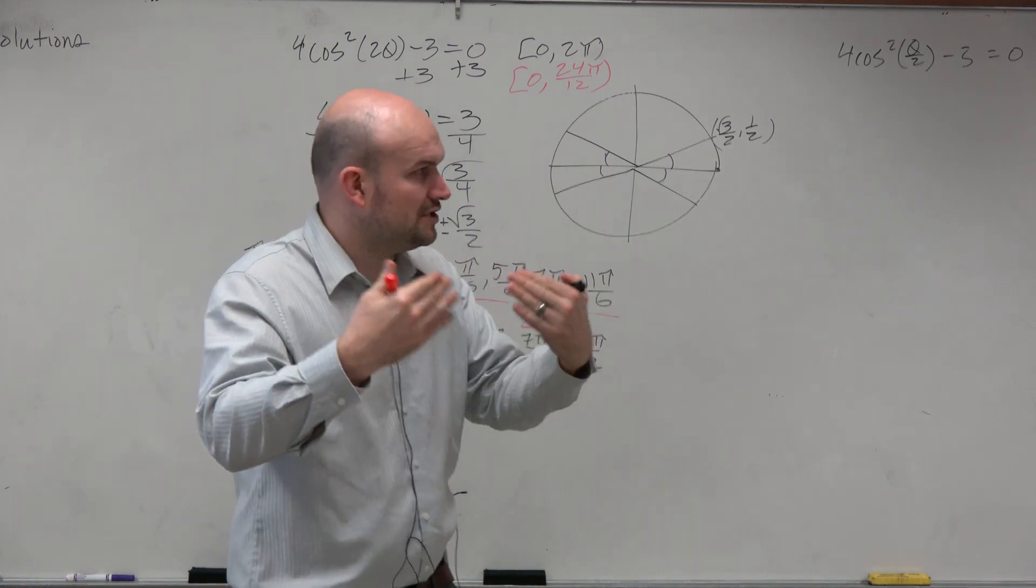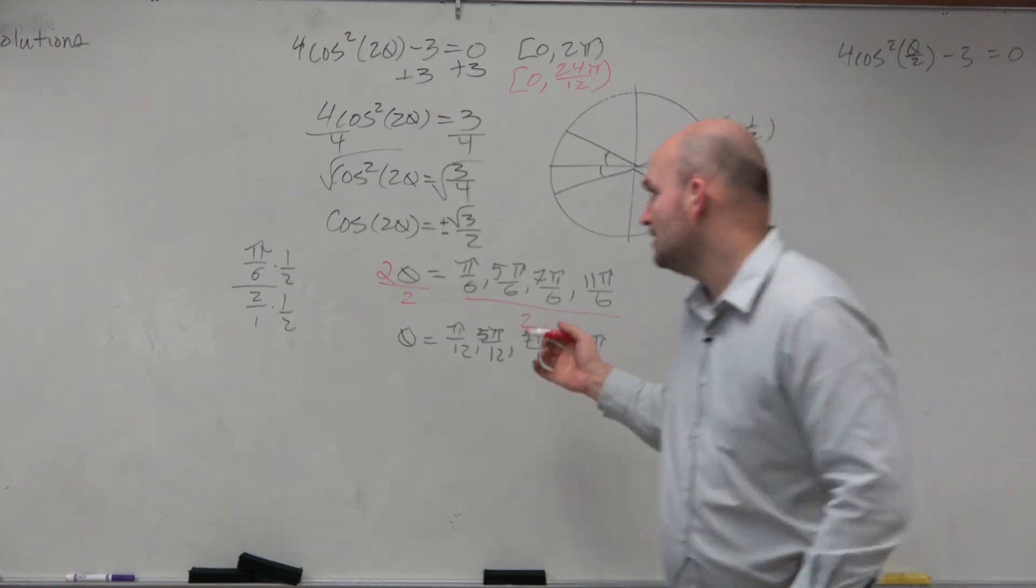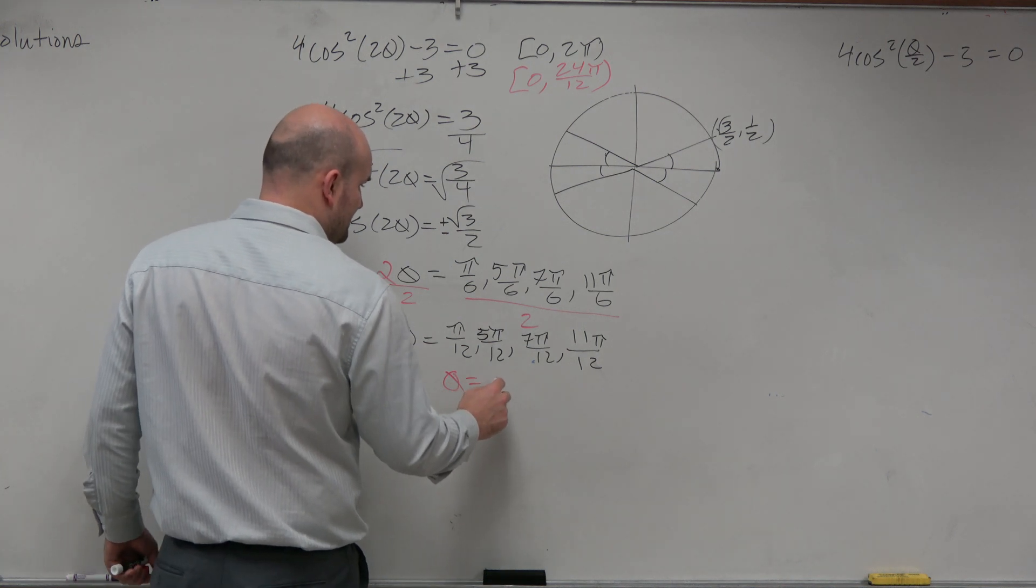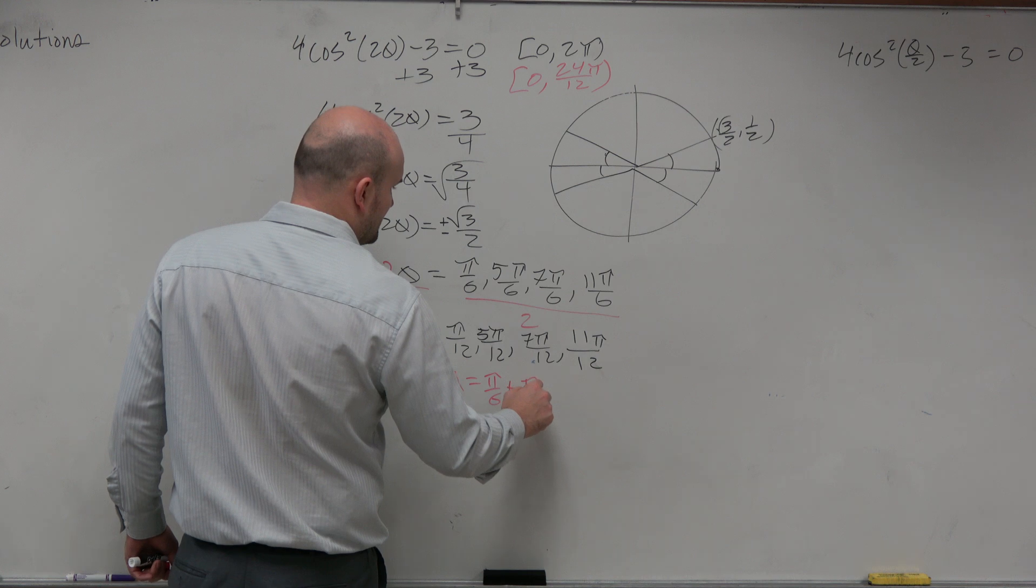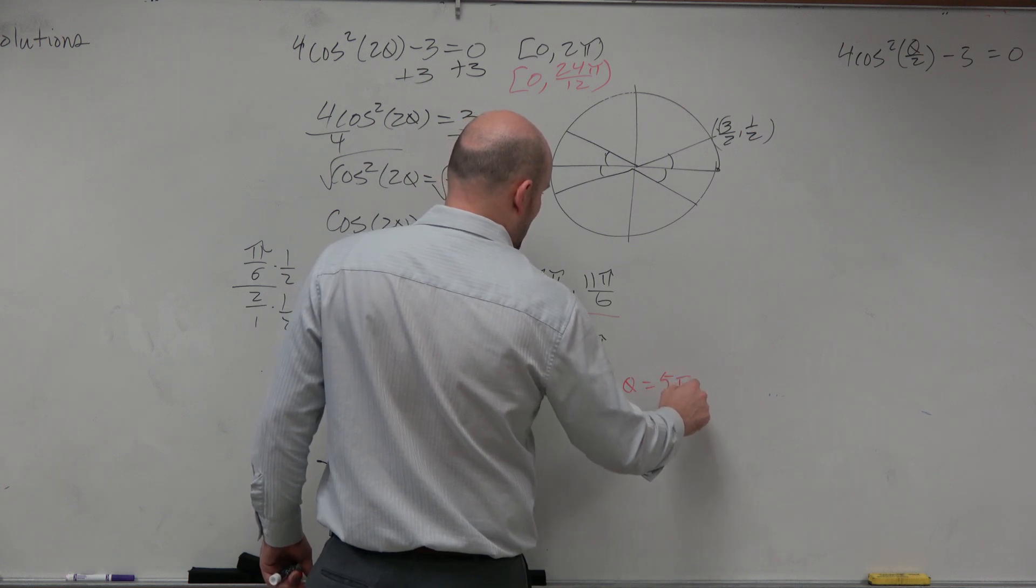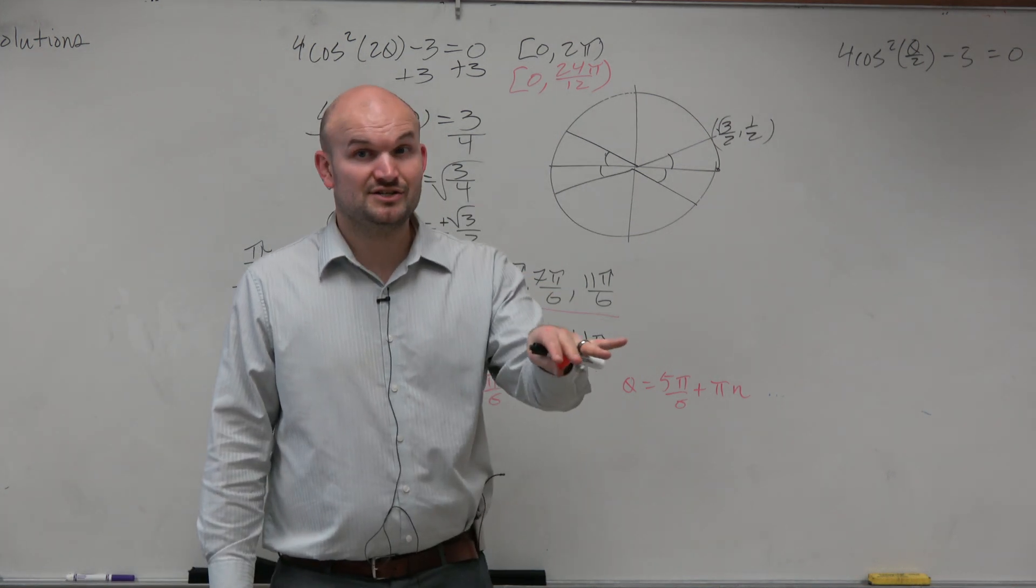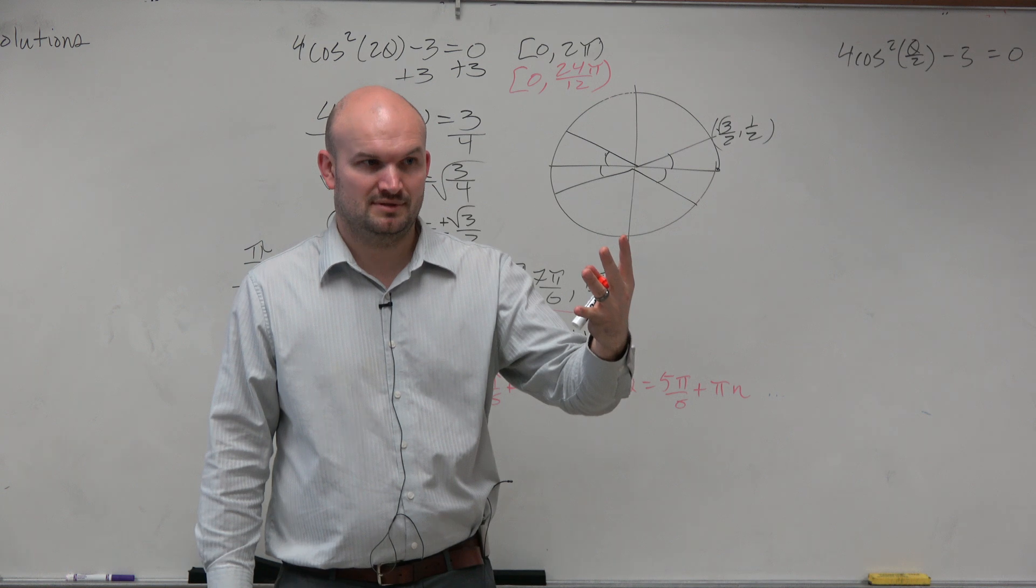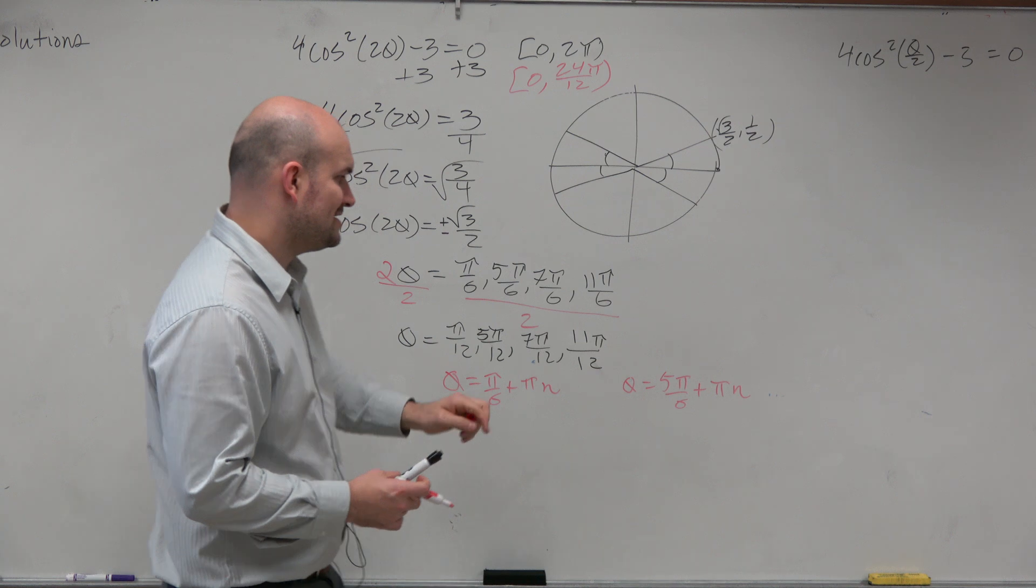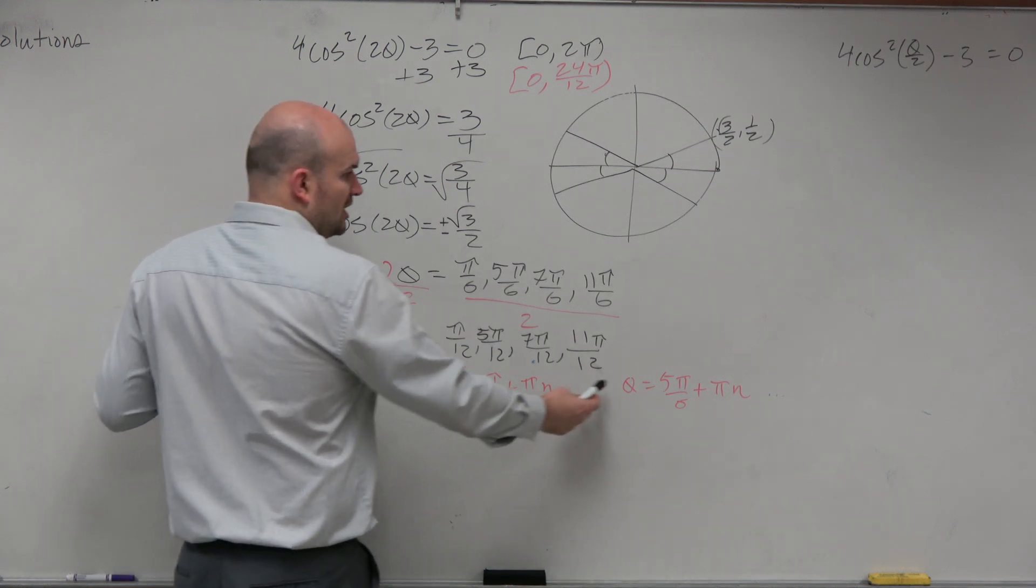So what I think is helpful to understand is to go back to our all solutions answer, which I erased for you, but hopefully you guys wrote down. So if I was going to find all the solutions, I said theta equals pi over 6 plus pi n. And then I had theta equals 5 pi over 6 plus pi n. Remember my simplified answers? Now, if you didn't do the simplified answers, you would have to do this process to all four of them. That's way too much work.